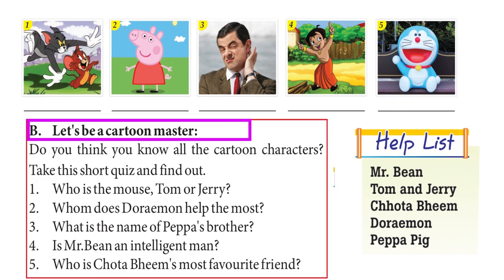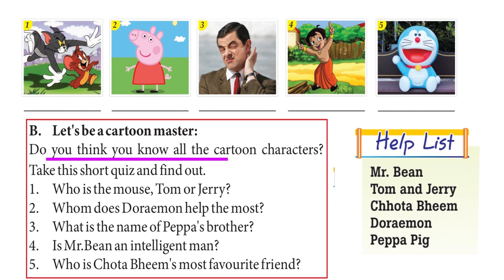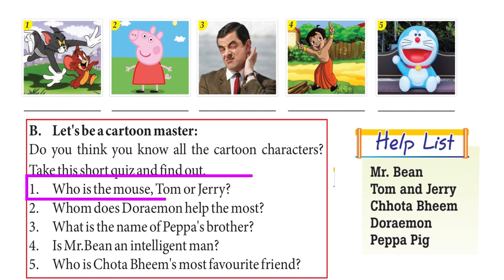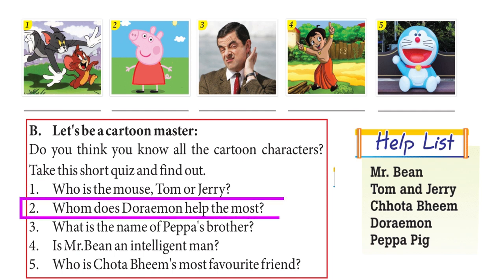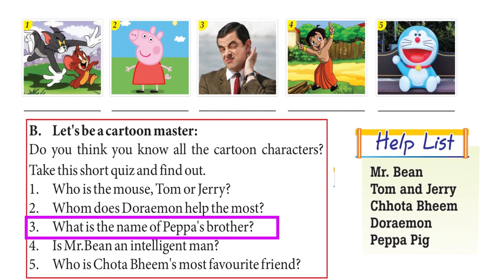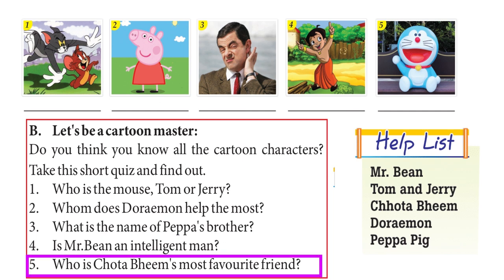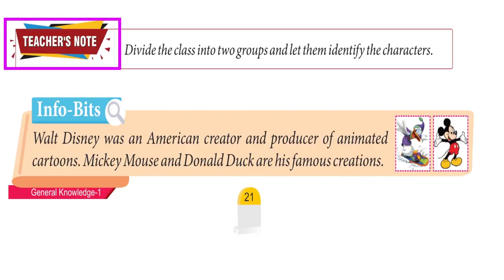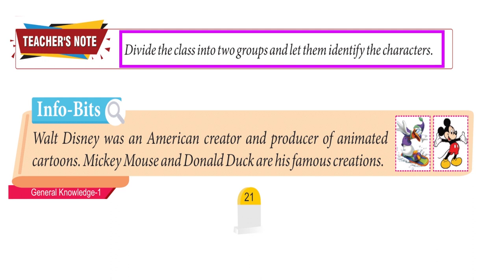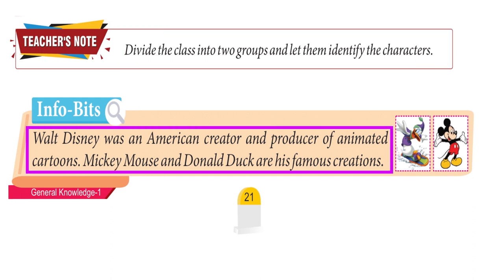Let's be a cartoon master. Who is the mouse — Tom or Jerry? Jerry. Whom does Doraemon help the most? Nobita. What is the name of Peppa's brother? George. Is Mr. Bean an intelligent man? Yes. Who is Chota Bheem's most favourite friend? Jaggu the monkey. Teacher's Note: Divide the class into two groups and let them identify the characters. Info Bits: Walt Disney was an American creator and producer of animated cartoons — Mickey Mouse and Donald Duck are his famous creations.